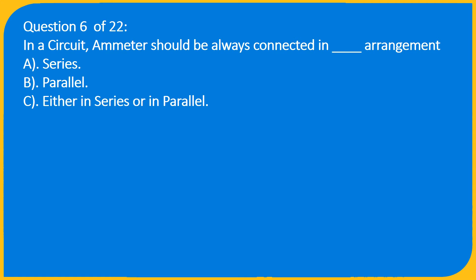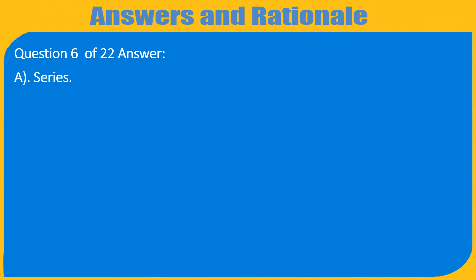Question 6 of 22: In a circuit, an ammeter should always be connected in which arrangement? A. Series, B. Parallel, C. Either in series or in parallel. Answer: A. Series.